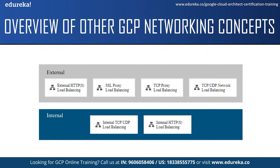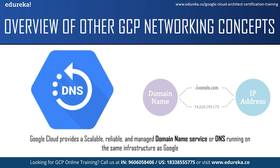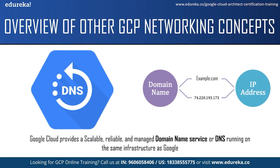Now let us understand what is Cloud DNS. Google Cloud provides a scalable, reliable, and managed domain name service running on the same infrastructure as Google. DNS is a hierarchically distributed database that lets you store IP addresses and other data and look them up by names. In other words, DNS is a directory of easily readable domain names that translate to numerical IP addresses used by computers to communicate with each other. For example, when you type a URL into a browser, DNS converts the URL into the IP address of a web server associated with that name — like www.example.com is translated to an IP address such as 72.220.193.173.